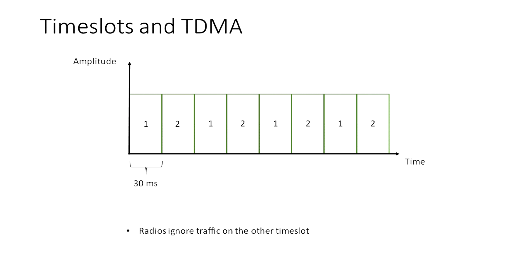The radios using time slots have to be in agreement as to the exact timing of each slot; otherwise they would probably overlap when they transmit. When using a repeater, this timing synchronisation is provided by the repeater. In simplex mode, however, time slots do not matter because there is no repeater to provide synchronisation. You can select either time slot on your radio on simplex channels and still hear other users on both time slots.